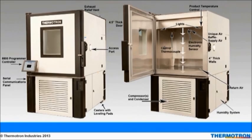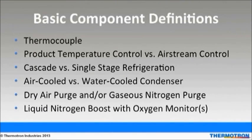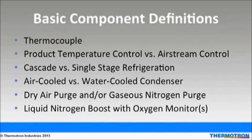The air returns from the chamber floor. The humidity system is located on the right side cabinet, and the compressors and condensers are housed in the front cabinet. A thermocouple is a movable device that measures temperature. Product temperature control maximizes stress on the product through the chamber's control system and optimized air flow. Airstream control measures the air temperature at the outlet source of the air supply. Product temperature control measures the product's temperature.